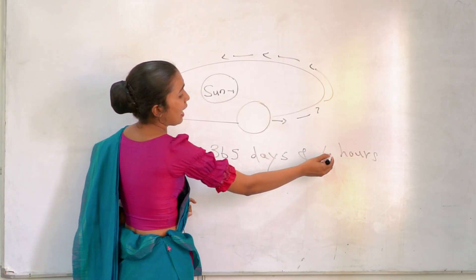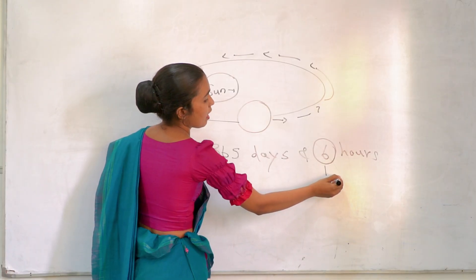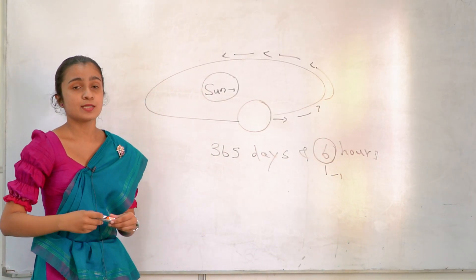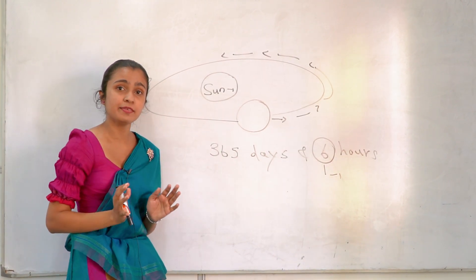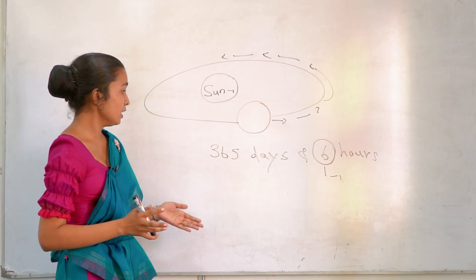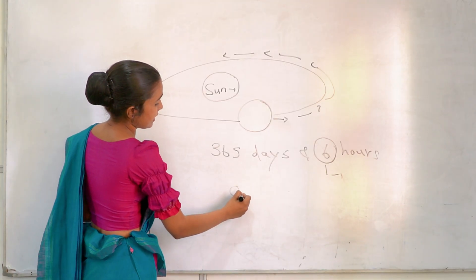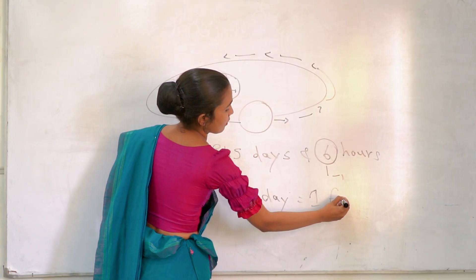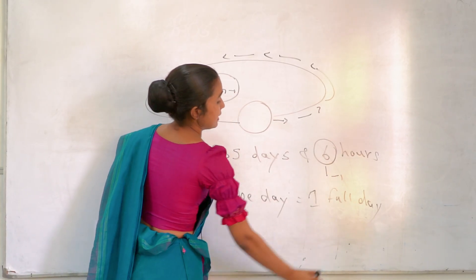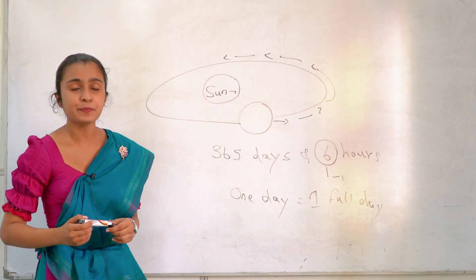So there are additional 6 hours. So adding these four 6 hours together, there is one day created, a full day. So it is called as leap year.